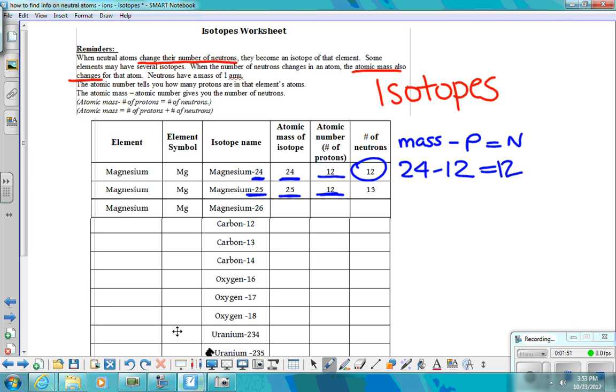So we take our 25, which was our atomic mass. We subtract the number of protons, which was 12, which will give us 13, 13 neutrons.